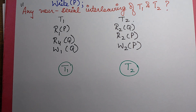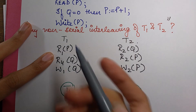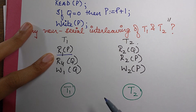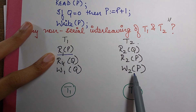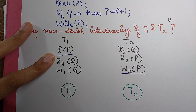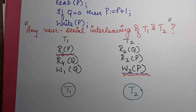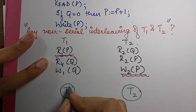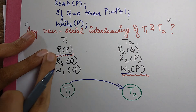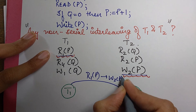Now I'll draw the arrows of conflicts. We know conflicts are either a read-write pair, a write-write pair, or a write-read pair between different transactions. Checking T1: this is R1P, so for a conflict from T1 to T2 we require a write operation on the same data item P — and W2P occurs here. So this is a conflict; I'll mark it with red. The arrow goes from R1P to W2P.